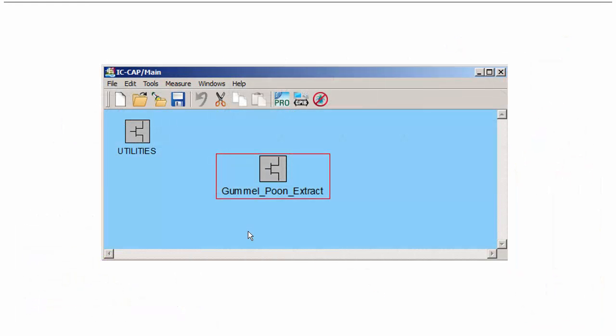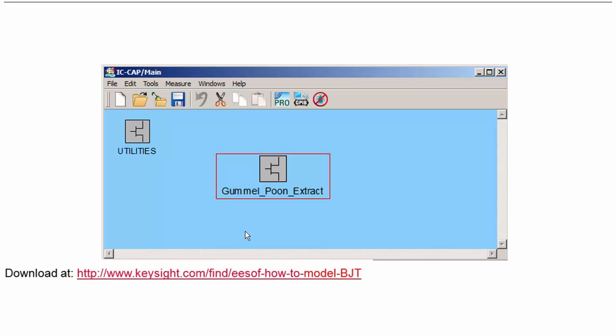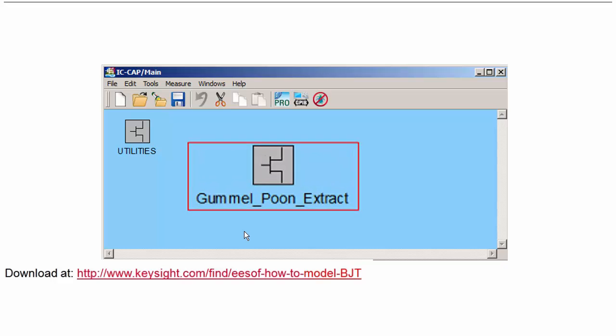After this general introduction to the model, let's now focus on the modeling steps themselves. For this video, I have selected demo data which best illustrate the special effects of the Gummel-Poon model, and how its parameters can be determined. The modeling project has been implemented into Keysight's IC-CAP software, which I will use to demonstrate the step-by-step modeling procedure.